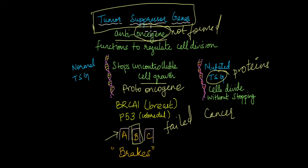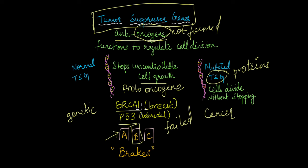When it comes to tumor suppressor genes, some examples are the BRCA1 gene, which is a very common type of gene that is mutated in a lot of types of breast cancers, specifically the ones that are genetic or that can be inherited. The other example is the P53 gene, which has been associated with colorectal cancer and pancreatic cancer. It's not very important to know these examples for any examination, but it's nice to know.